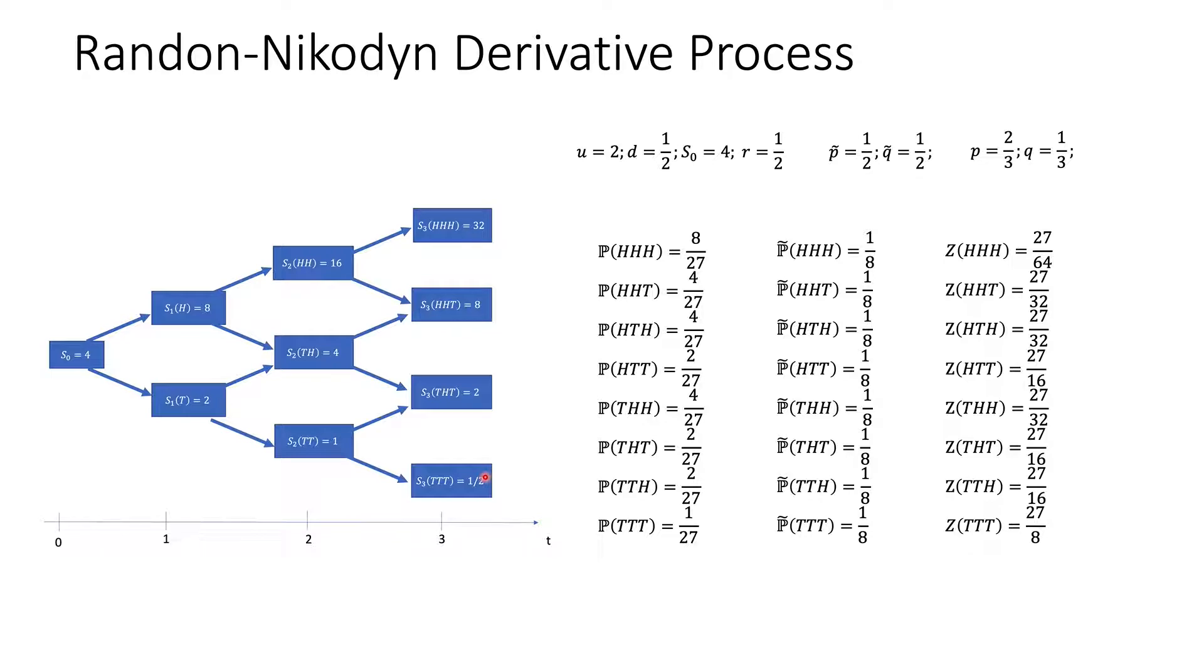However, sometimes you can think about having an asset whose payoff really depends maybe only on the first two coin tosses. So to be able to handle this case as well, we need to introduce the concept of Randon-Nikodym derivative process. And you will see in the next slide what that means.